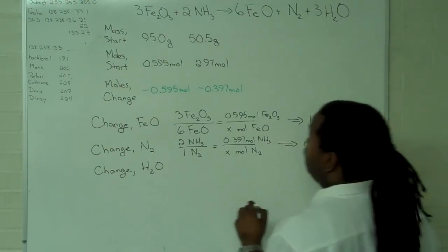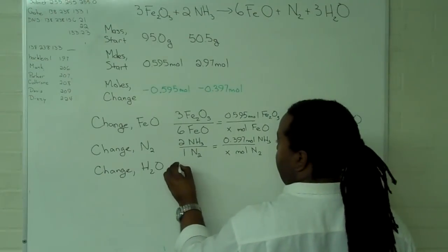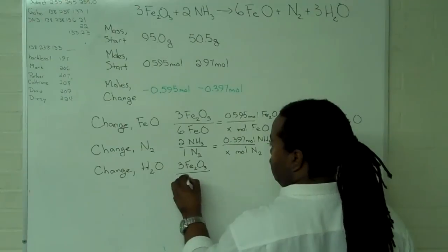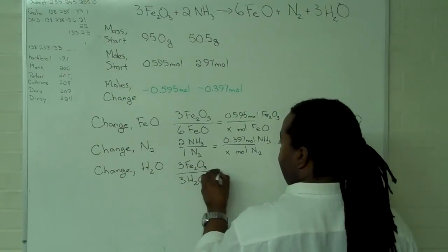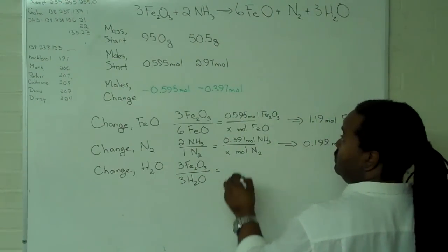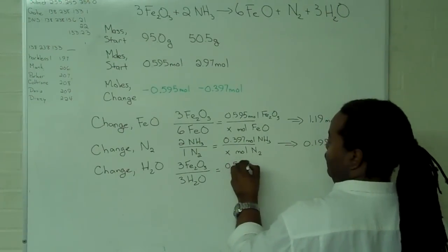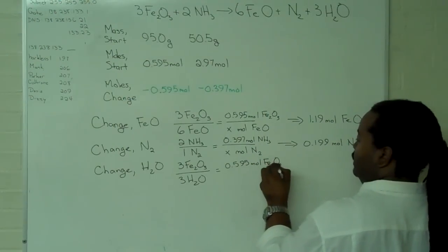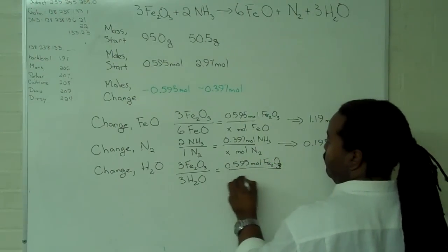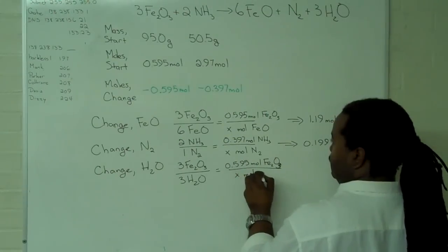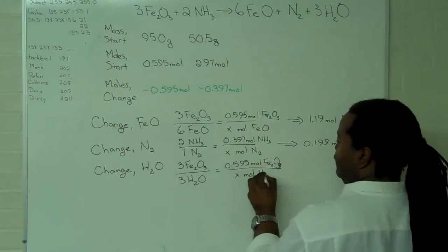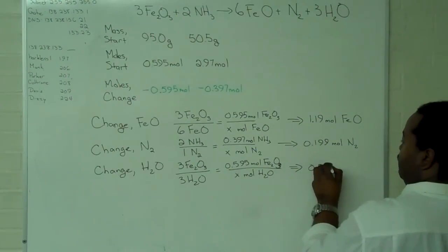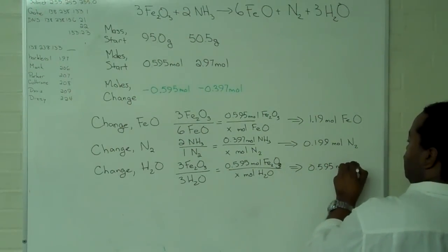Finally, for the water, I recognize that I have the same coefficient, which allows me to solve this part without having to resort to using calculators or anything like that. But feel free to multiply across the equals and solve for the value of x. You should find that it is 0.595 moles of water.